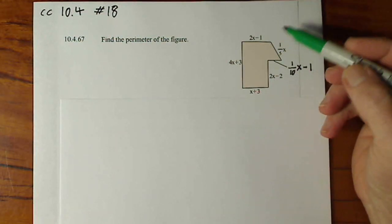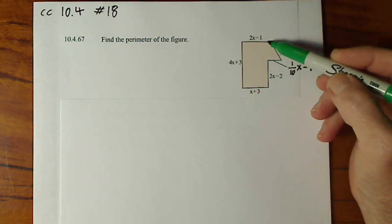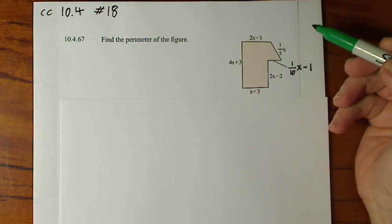On this problem we're asked to find the perimeter of this shape. To find the perimeter you add the lengths of each side.